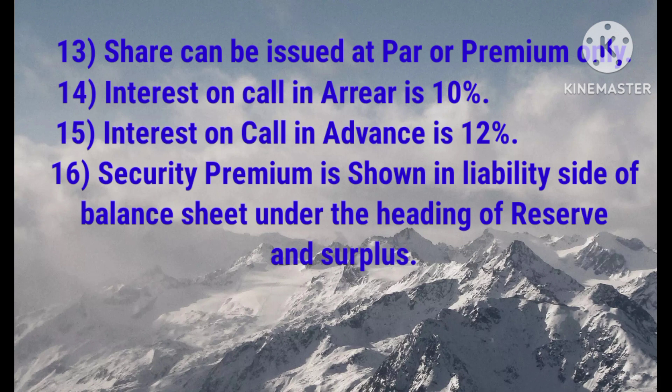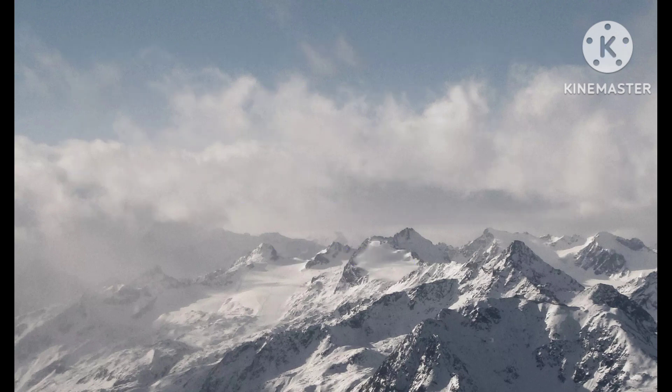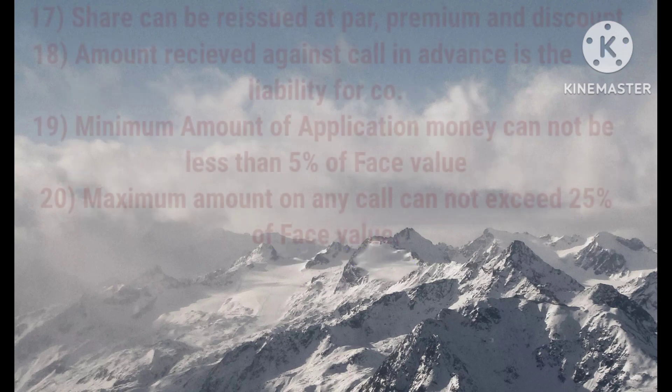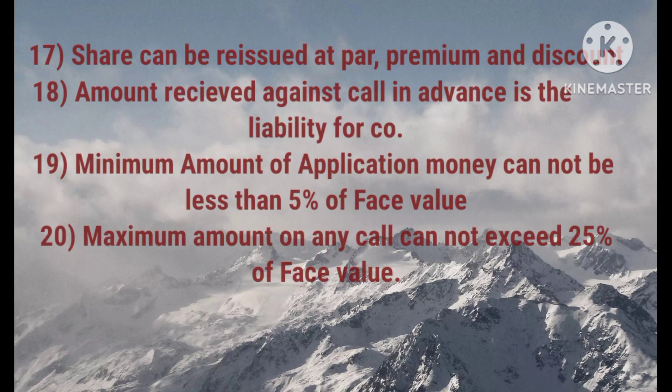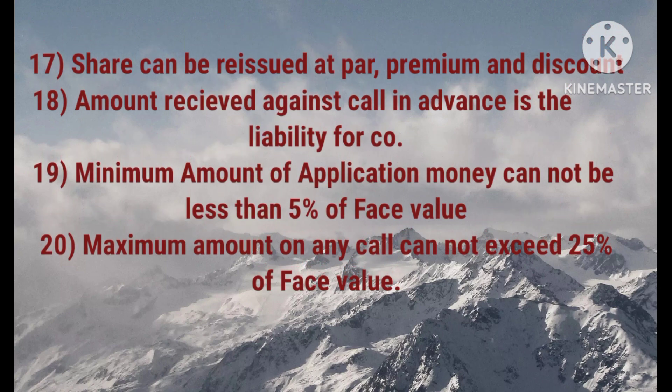Security premium is shown on the liability side of the balance sheet under the heading of reserves and surplus. Shares can be reissued at par, at a premium, or at a discount.